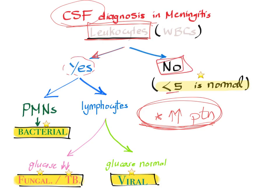Next, look at the leukocytes. If they are elevated, it's probably meningitis. If there are fewer than five white blood cells in the CSF, that's probably normal. But if leukocytosis is present — more than five cells — you need to investigate further, because elevated white blood cells can be bacterial, fungal, TB, or viral.